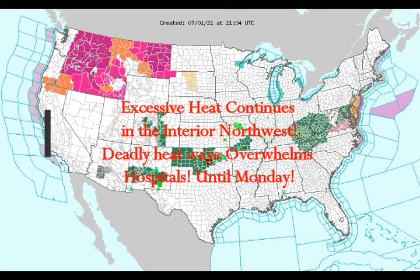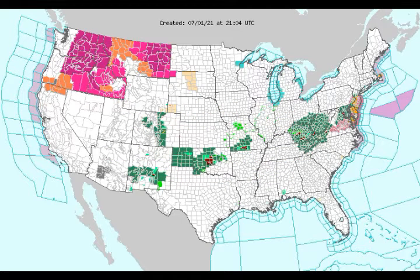Excessive heat continues in the interior northwest and the deadly heat wave is overwhelming hospitals in the area. We're going to take a look at the maps and what's going to continue and what the NOAA Weather Service's warning is concerning this.